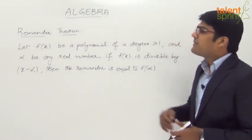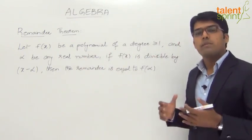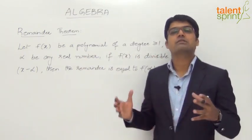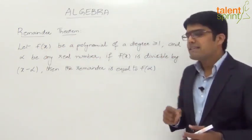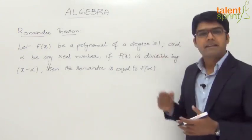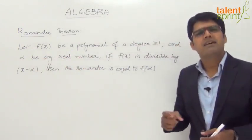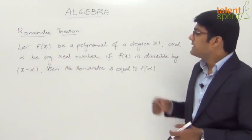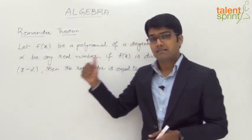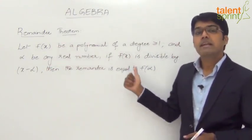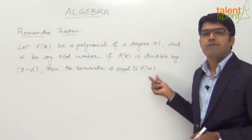The remainder theorem states that if f of x is a polynomial of degree greater than or equal to 1, and alpha is any real number, then if we divide the polynomial f of x by x minus alpha, the remainder will be equal to f of alpha.